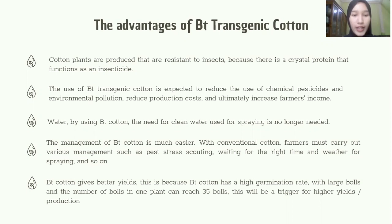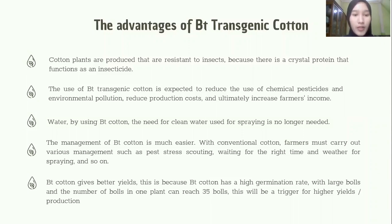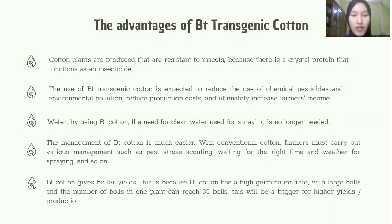By using Bt cotton, the need for clean water used for spraying is no longer needed, and the management of Bt cotton is much easier. With conventional cotton, farmers must carry out various management tasks such as pesticide coating, waiting for the right time and weather for spraying, and so on. Bt cotton gives better yields because it has a high germination rate, with large bolls, and the number of bolls on one plant can reach 35 bolls.